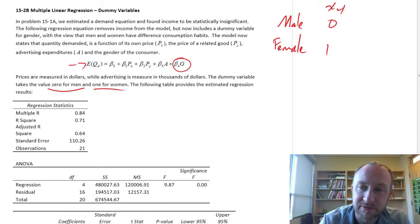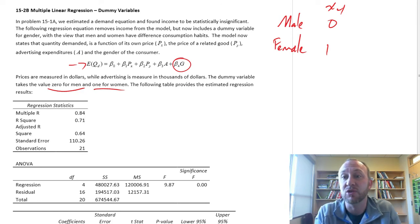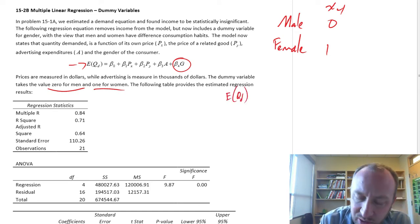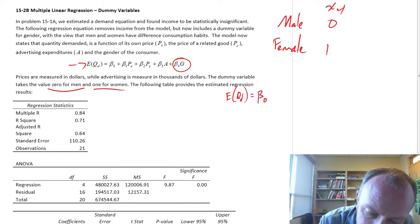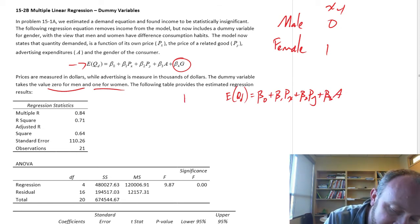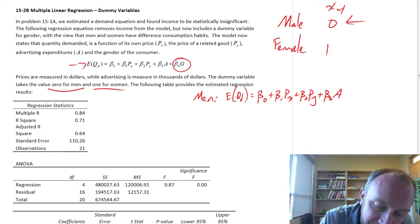We can take this regression equation and almost think of it as two models or two equations. The expected value for quantity demanded for men would look just like this: beta 0, beta 1 times its own price, beta 2 times price of another good, beta 3 times advertising expenditures. Because if it's for men, that x4 gender dummy takes on a value of zero, so it's not there.